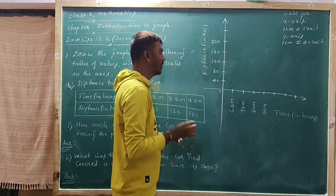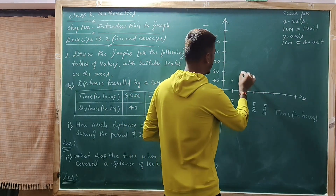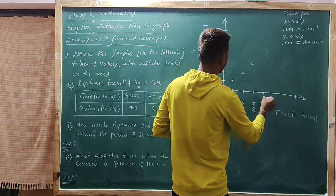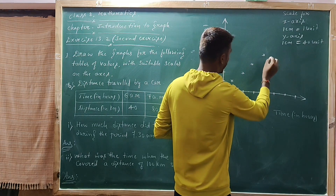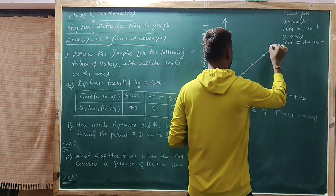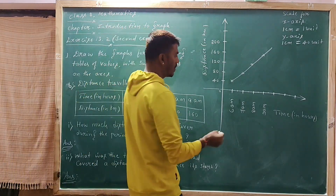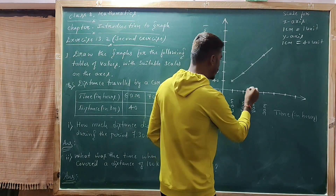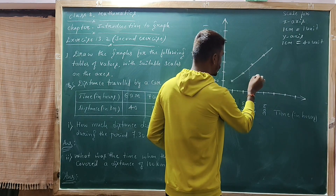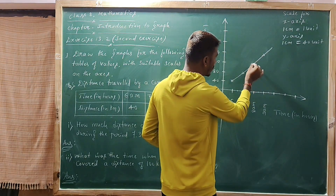Observe: at 6 a.m. the car is at 40 km. At 7 a.m., 80 km. At 8 a.m., 120 km. At 9 a.m., 160 km. Join all the coordinate points. The first sub-question: how much distance did the car cover between 7:30 a.m. and 8 a.m.? Draw an imaginary dotted line to show the distance covered between 7:30 a.m. and 8 a.m.